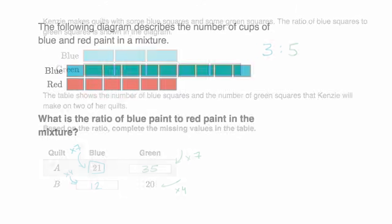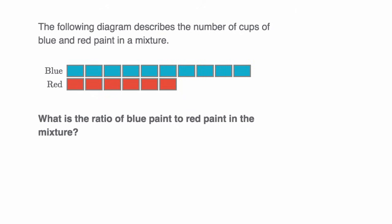Let's do another example. Here we are told the following diagram describes the number of cups of blue and red paint in a mixture. What is the ratio of blue paint to red paint in the mixture? So try to work it out.